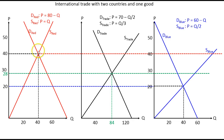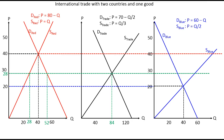Looking at red country, when we move from autarky to international trade the price falls, so producers are not willing to produce as much. Producers are now only willing to produce 28 units, but consumers are willing to buy 52 units. This creates an excess demand from 28 up to 52 units in red country, which must be fulfilled by imports of 24 units.